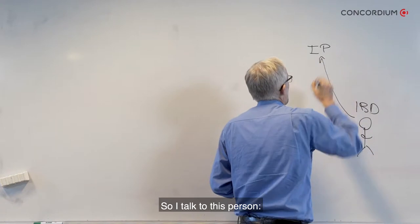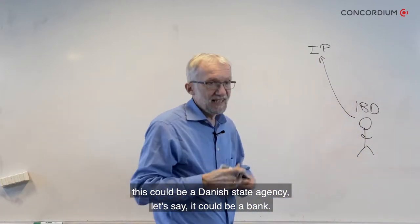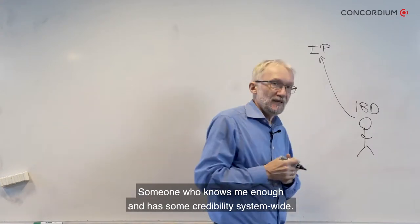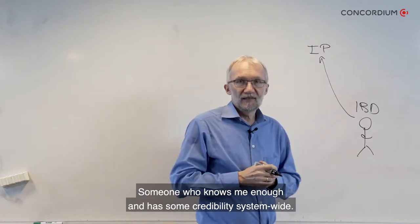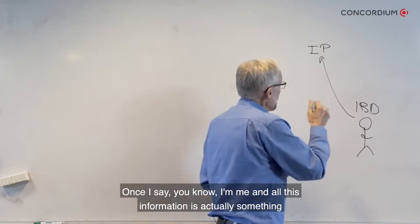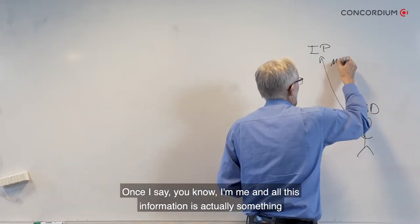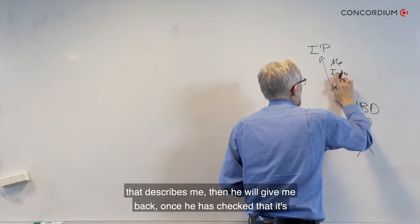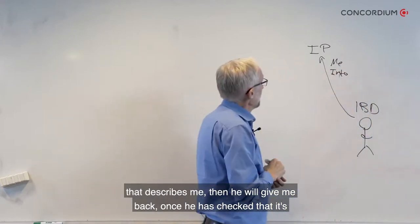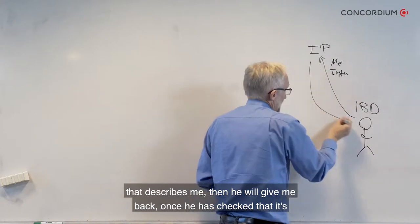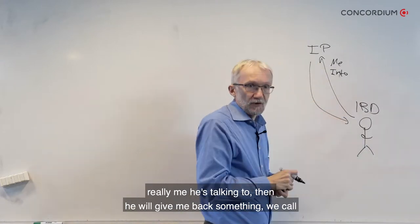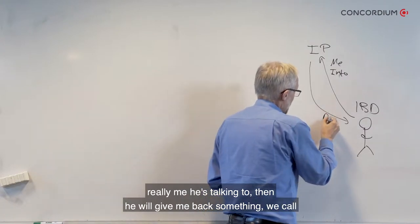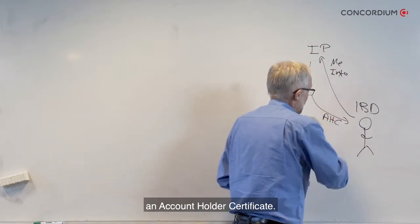So you talk to this person — it could be a Danish state agency, it could be a bank, someone who knows you well enough and has some credibility system-wide. Once you confirm your identity and that all the information describes you correctly, and once they verify it's really you they're talking to, they give you back something we call an account holder certificate.